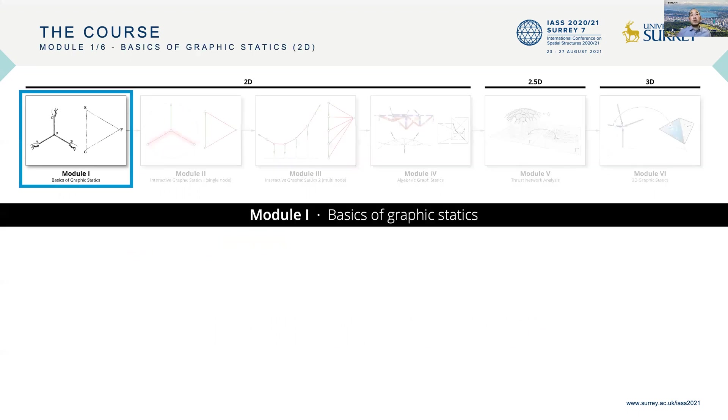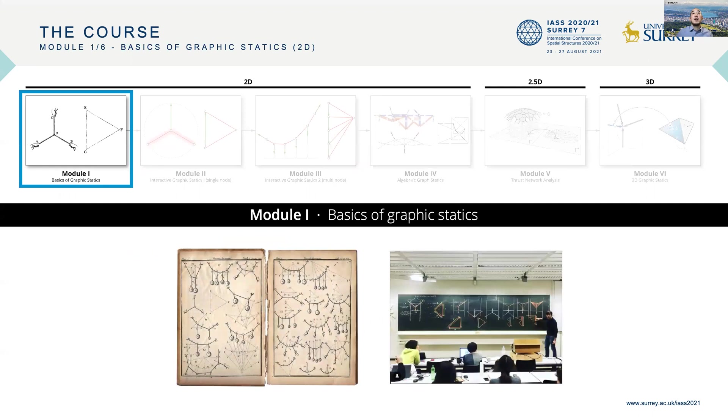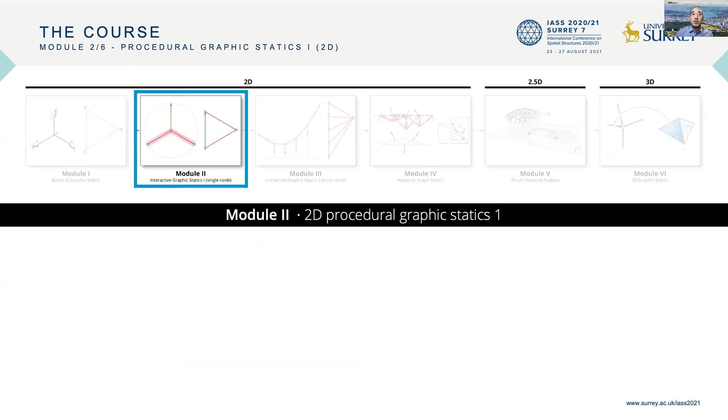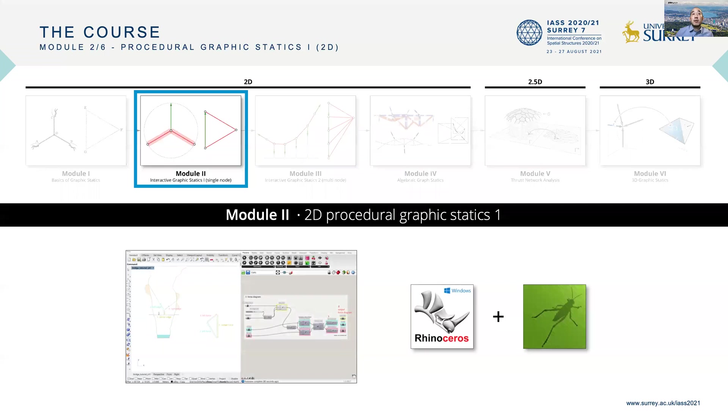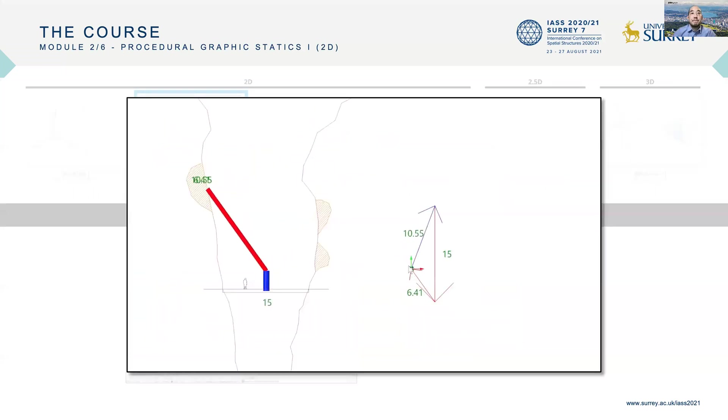In Module 1, students were taught the fundamental principles of graphic statics on paper. In Module 2, students were taught how to use Grasshopper, the visual programming language, to procedurally construct simple parametric drawings of single-node structures, so they can dynamically move around points in the force diagram to explore what the consequences are in the form diagram.